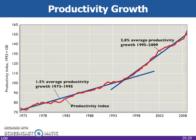This graph reflects the growth in U.S. productivity between 1973 and 2008. Average productivity was 1.5% until 1995, but after 1995, the average productivity growth rate increased to 2.8%.